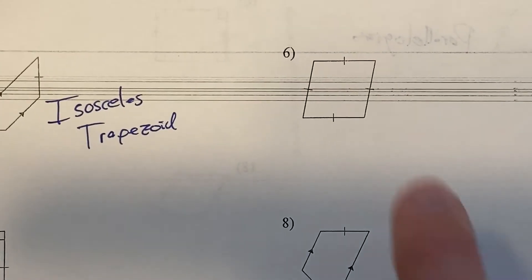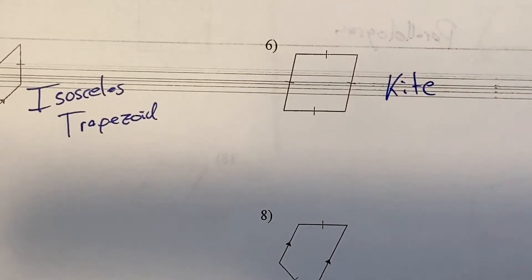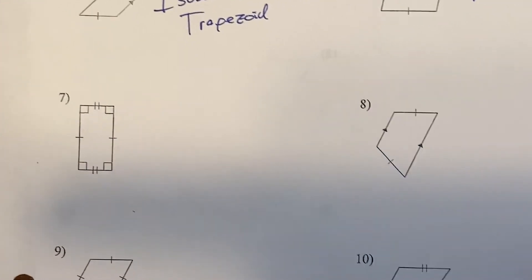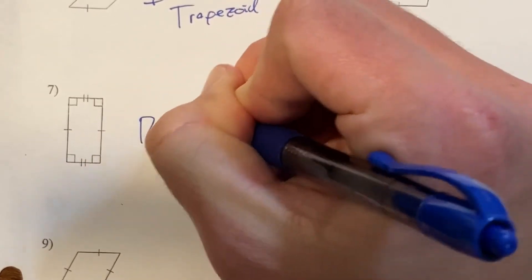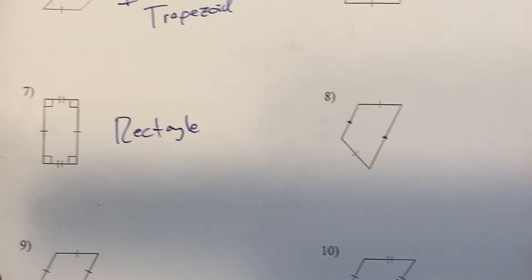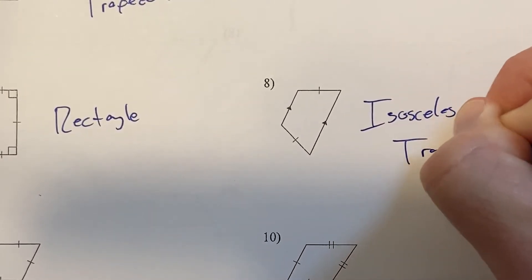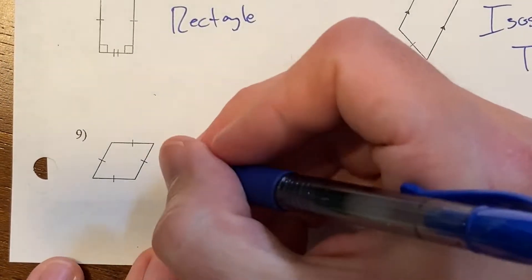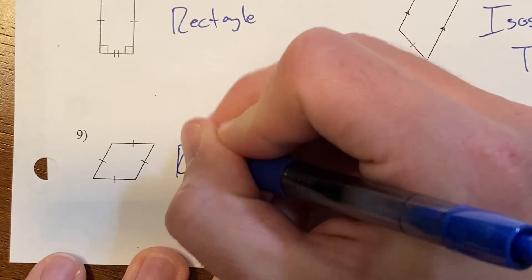Number six is a kite. Number seven — let me zoom out a little — number seven is a rectangle. Number eight is an isosceles trapezoid. Number nine: four congruent sides — when I have four congruent sides, that's a rhombus.